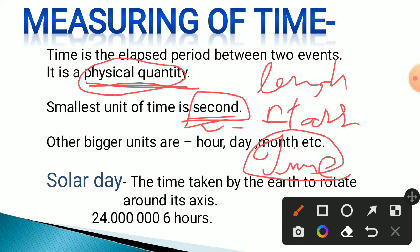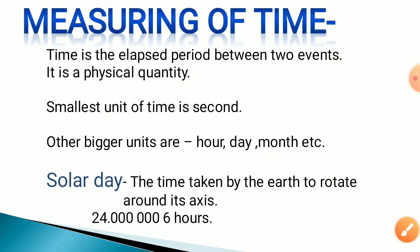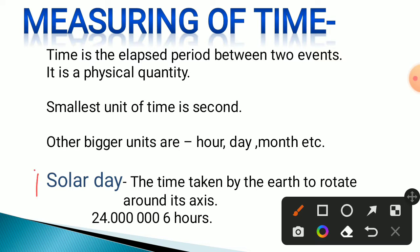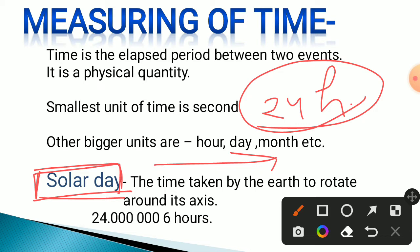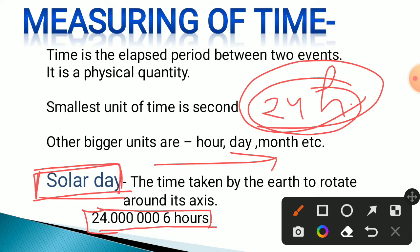Bigger units of time include hour, day, month, year, and so on. One important topic related to time is the solar day. Generally we know our day is 24 hours, and we call it the solar day. But the actual measurement of a solar day is 24.00000006 hours — this is the precise definition of the solar day.